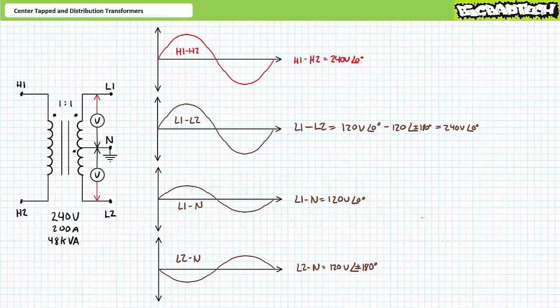240 volts comes into a distribution transformer and it's split into two 120-volt phases — L1 to neutral and L2 to neutral — equal in magnitude yet perfectly out of phase with one another. This type of system additionally allows 240 volts between L1 and L2 for larger electrical loads like water heaters, ovens, dryers, car chargers, and outlets for equipment like welders.